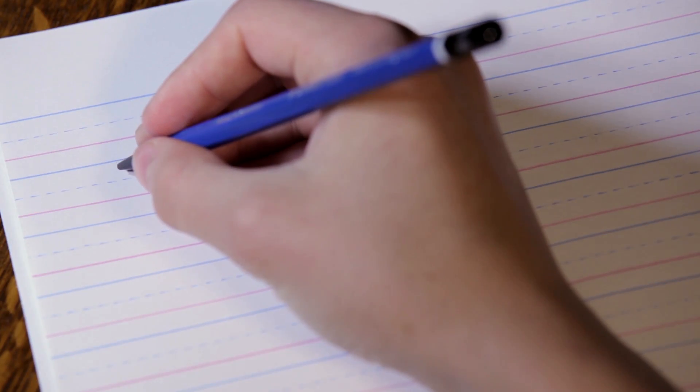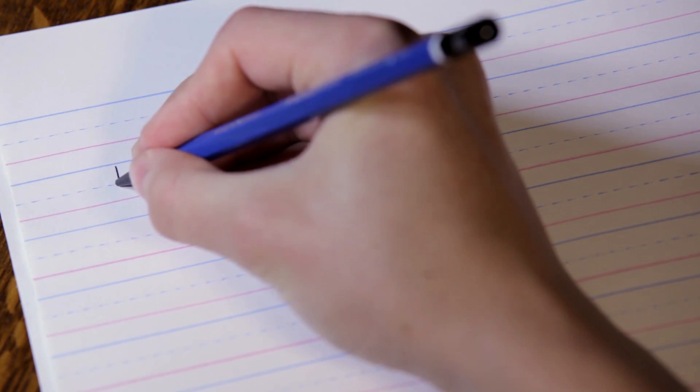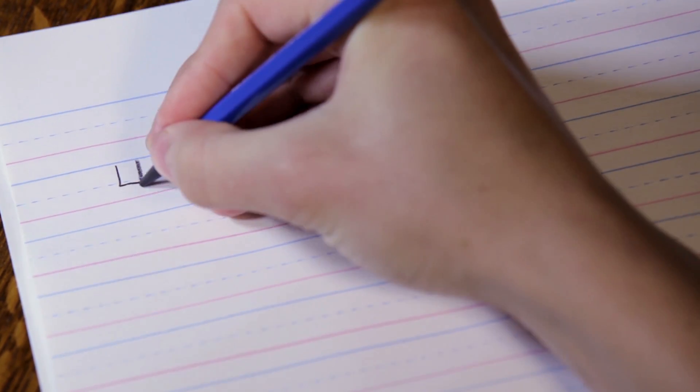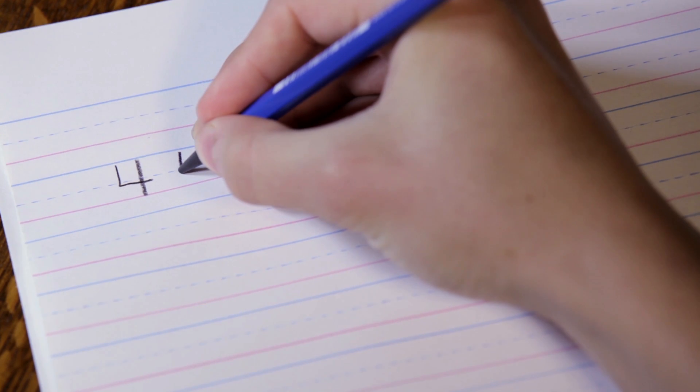This is how we write the number four. Make a little corner, then a long line down. There's the little corner and a long line down.